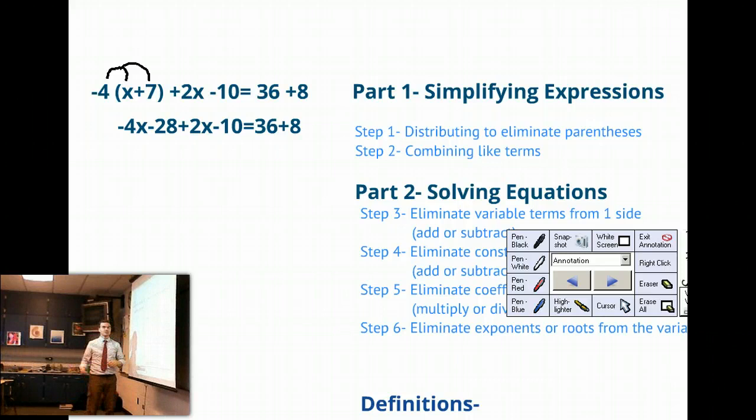The next thing we're going to do is combine like terms. If I see like terms, like my x terms are like, I can combine those to get minus 2x. Negative 4 plus 2 is minus 2, so minus 2x. Negative 28 minus 10. Combine those, I would get negative 38. Also on the other side, the other expression, 36 plus 8. Those constants are like terms, so we can combine 36 plus 8.